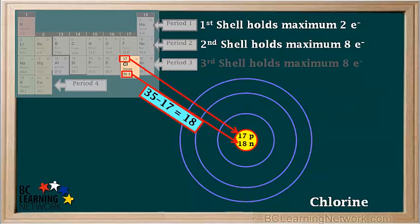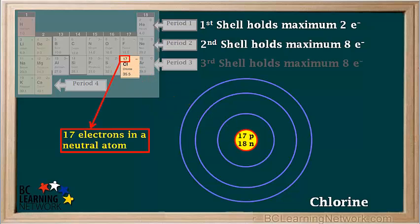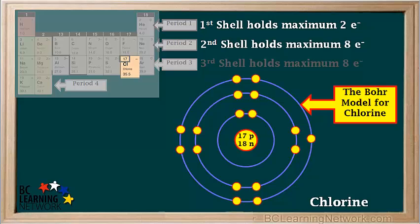The next element, chlorine, has 17 protons. The atomic mass of chlorine is 35.5. About 76% of chlorine atoms in nature have an atomic mass of 35, while about 24% have an atomic mass of 37. So we'll use the most common isotope of chlorine, chlorine-35, to calculate the number of neutrons: 35 minus 17 equals 18. A neutral chlorine atom has 17 electrons, which can be arranged like this. So this is the Bohr model for chlorine.